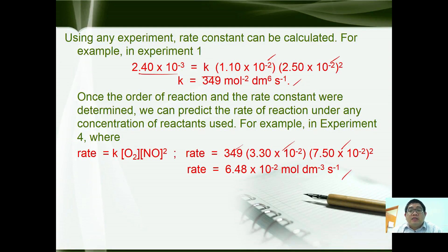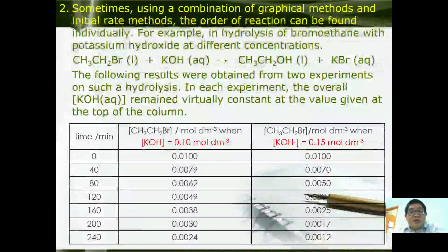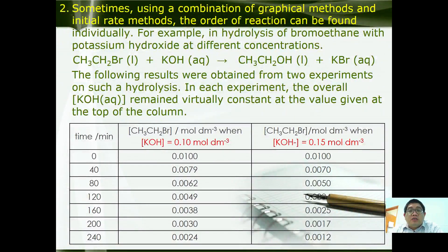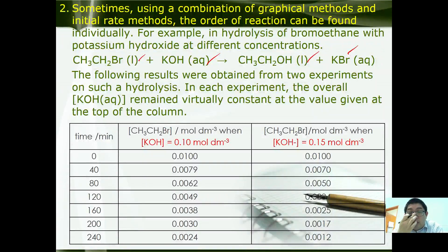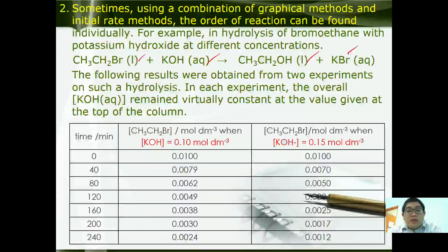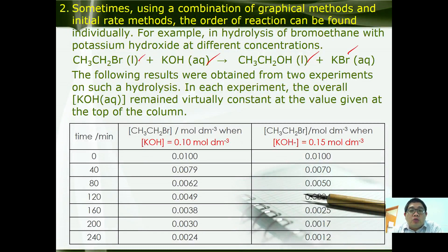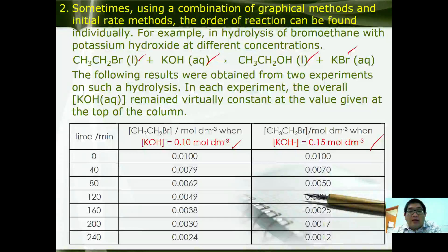At higher levels, one method is by using the graphical methods. Using the combination between the graphical method and initial rate method, the order of reaction can be found. For example, to study the hydrolysis of bromoethane with potassium hydroxide to form alcohol and potassium bromide. In each experiment, the concentration of KOH remained virtually constant at the value given on the top of the column. These are two experiments carried out at two different concentrations of potassium hydroxide. This is the graph of the changes of CH₃CH₂Br when you use KOH at 0.1 and KOH 0.15.